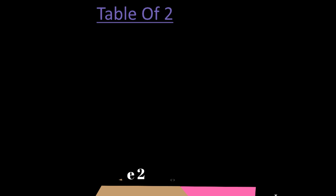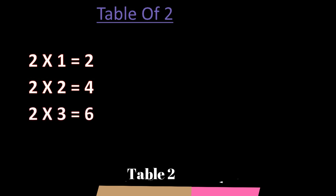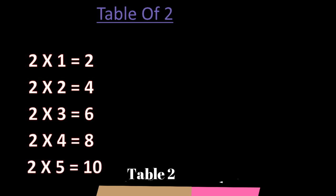First one, table of 2. 2 ones are 2. 2 twos are 4. 2 threes are 6. 2 fours are 8. 2 fives are 10. 2 sixes are 12.